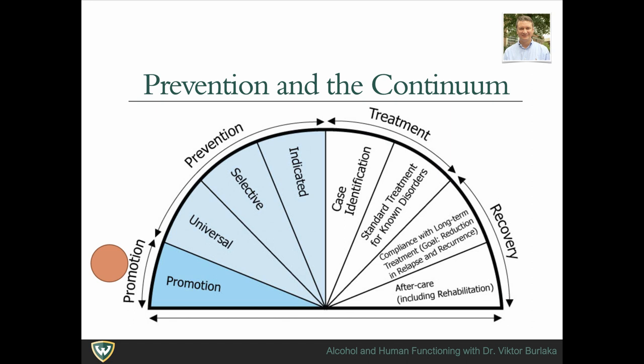Promotion strategies are strength-based interventions designed to build resilience and promote well-being. Universal prevention interventions are delivered to the general population without differentiating between persons at different risk levels—for example, schools may deliver drug awareness and resistance education programming to all students, regardless of whether they belong to a vulnerability or risk group.